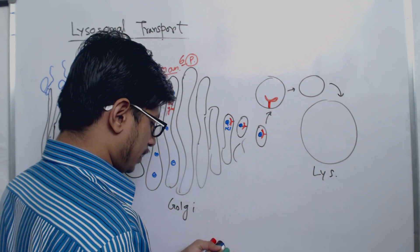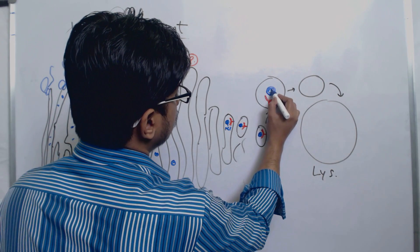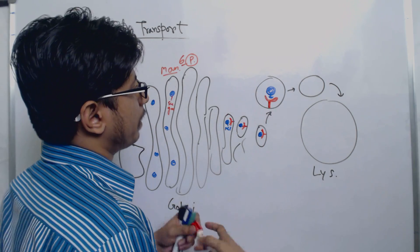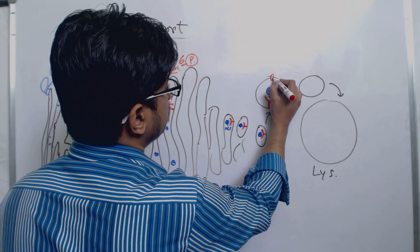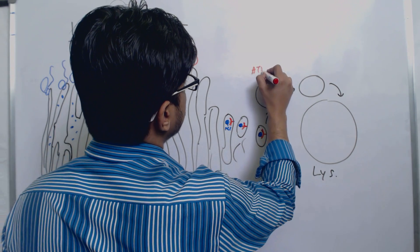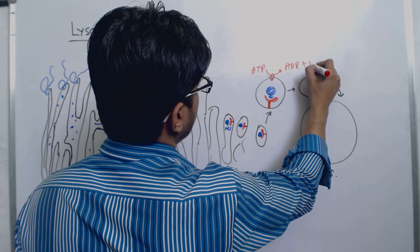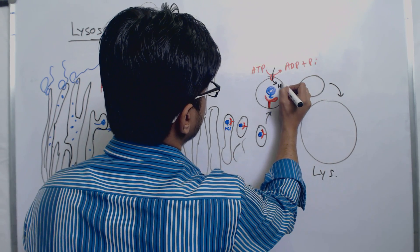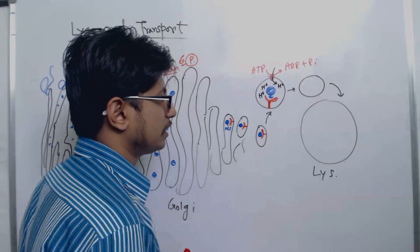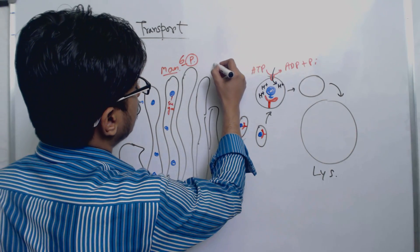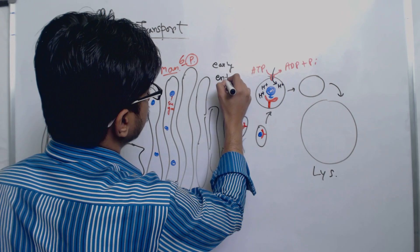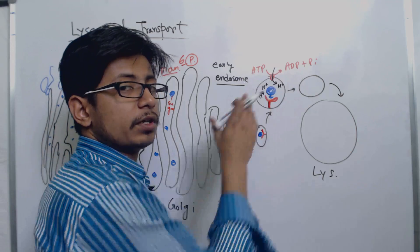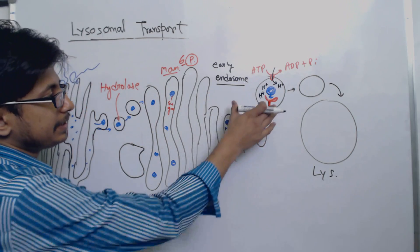At the very beginning, if you look at the vesicle, it has this mannose 6-phosphate receptor while the hydrolase with mannose 6-phosphate attaches to it. At this particular condition, there is an ATPase pump or you can say proton pump that is present. Through this pump, ATP hydrolysis is required as an energy source, and that helps driving protons inside this vesicle structure which is known as early endosome.